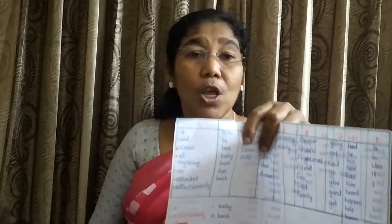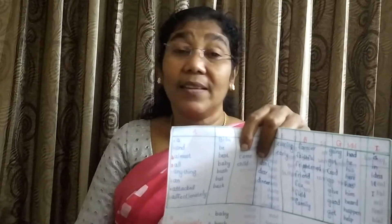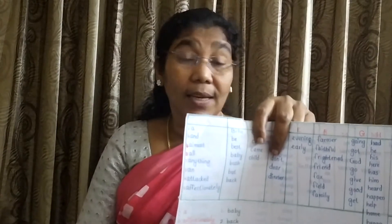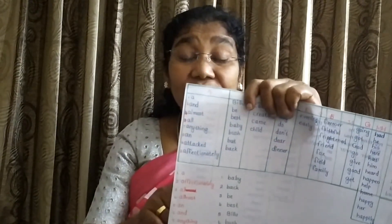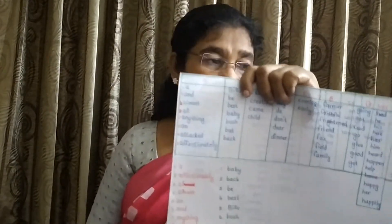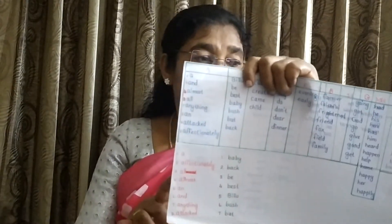There are no words with M as the second letter, so we pass to the next letter, N. There are 3 words: an, and, anything. For AN, only 2 letters, so that comes next — I put 5 here. The remaining words are and and anything. In the alphabet, Y comes after D, so and comes 6 and anything 7. The remaining word is attacked, so attacked is the last word and gets number 8.